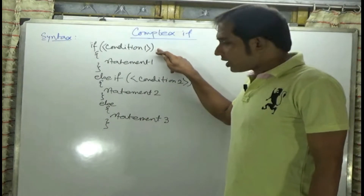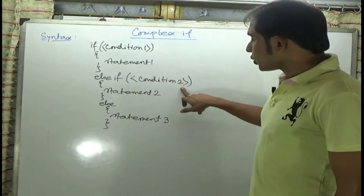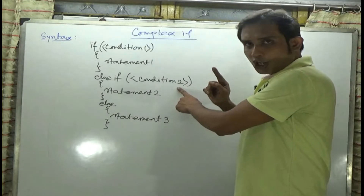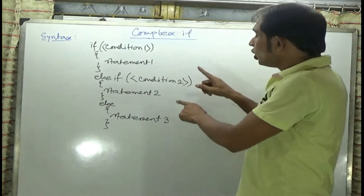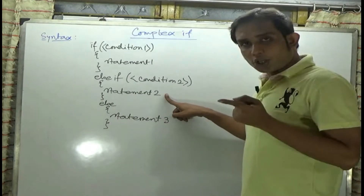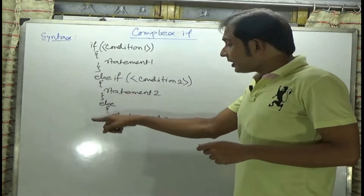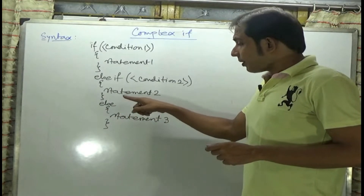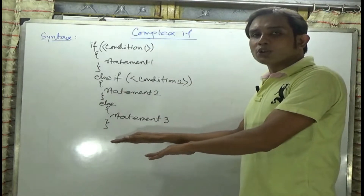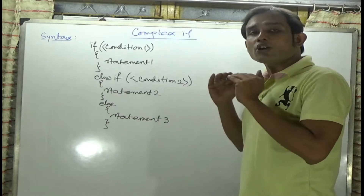Now, if condition 1 becomes false, then control comes to the else block and there is another condition — condition 2. So condition 2 is then checked; condition 2 is going to be checked only when condition 1 becomes false. Now, if condition 2 is true, then statement 2 will execute. And once statement 2 executes, the rest of the portion — whether another else if block or else block — is not going to be checked and not going to execute.